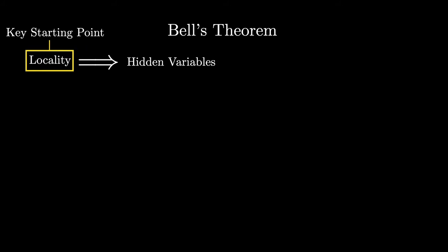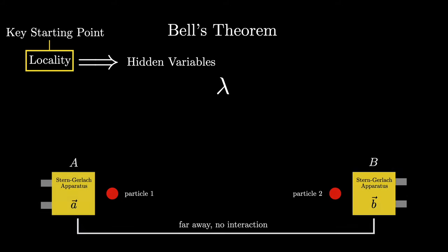So in this context, with locality as the key assumption and then hidden variables depending on this assumption, Bell captures the idea of hidden variables mathematically by introducing a general parameter lambda. This parameter could be a single variable or multiple variables. It doesn't matter for the proof. So now in the experimental setup, according to this analysis, the result of a spin measurement will not just depend on the orientation of the Stern-Gerlach apparatus, but also on lambda.